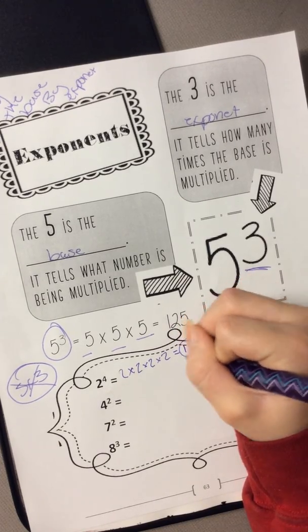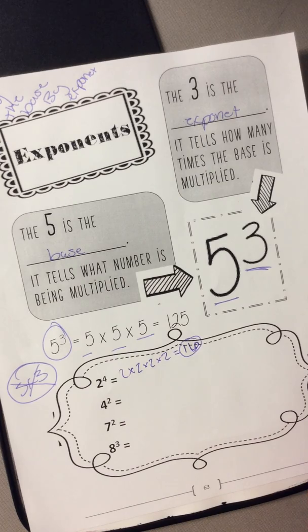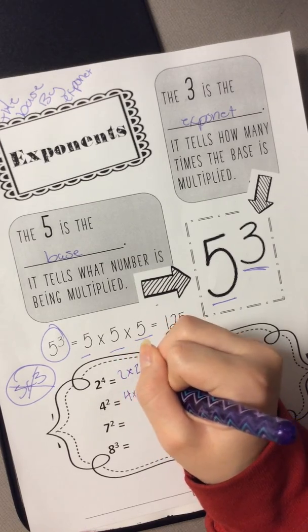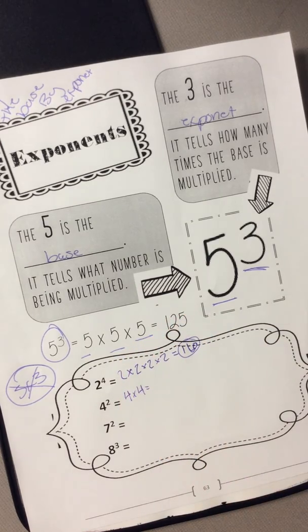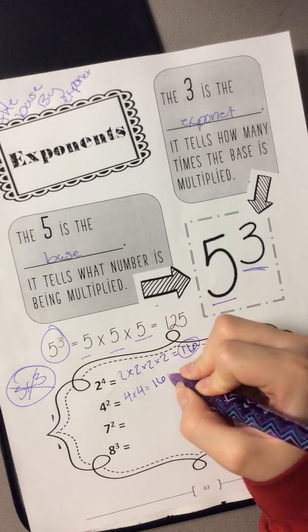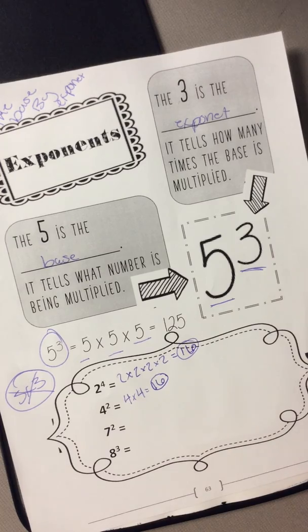I hope you got it fast. The next problem is your base is going to be 4 and then your exponent is going to be 2. That should be written out 4 times 4. I'll give you a second to find the answer. You should have got 16 hopefully.